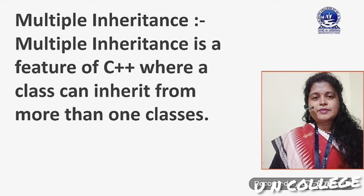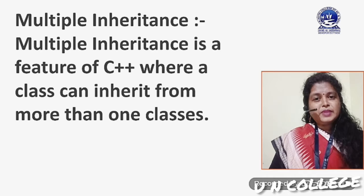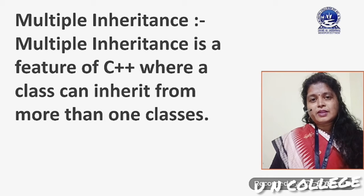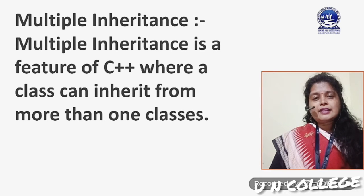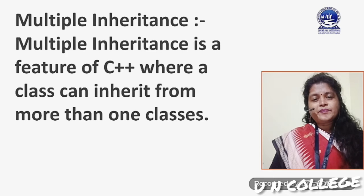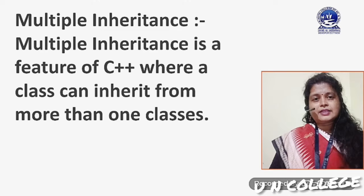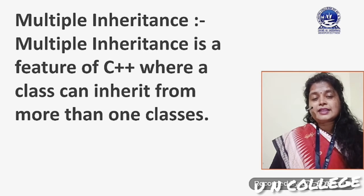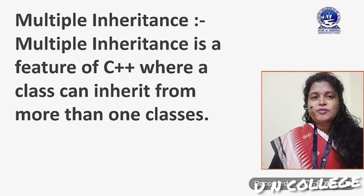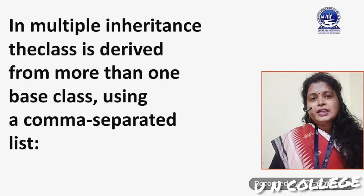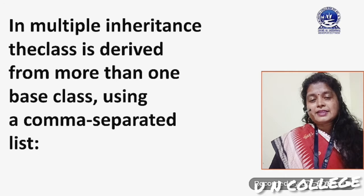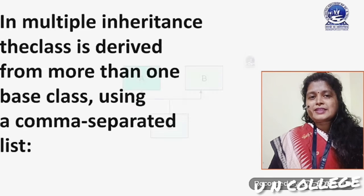First of all we will discuss about multiple inheritance. We know that in inheritance minimum two classes are there — one is parent class and another one is child class, or we may say base class and derived class. In multiple inheritance, a class can inherit from more than one class. The derived class is derived from more than one base class using a comma-separated list.